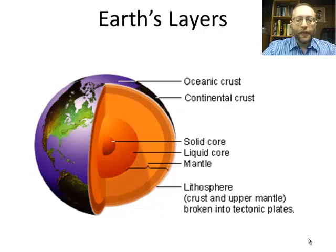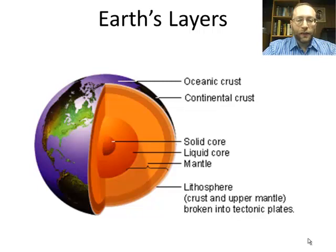The crust floats on the mantle, and the mantle is divided into several layers. The top layer of the mantle and the crust together are the lithosphere, and the lithosphere itself is broken up into rigid plates, which are called tectonic plates. The thickest layer is the mantle, and the mantle is solid, except some areas will be partially melted, and you'll see those areas later in the vodcast.